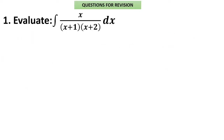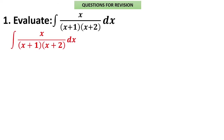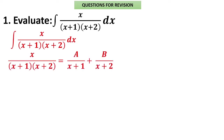Now let us solve: x/[(x + 1)(x + 2)]. If the denominator is given in expanded form, you can factorize and apply partial fractions. If the denominator has more than two linear factors, you must use the partial fraction technique. This is a proper fraction with two linear factors in the denominator, so write it as A/(x + 1) + B/(x + 2). We need to find A and B, then integrate.